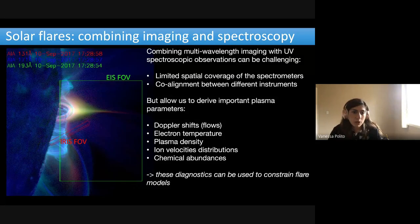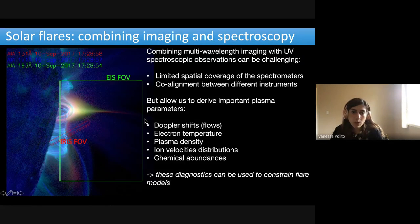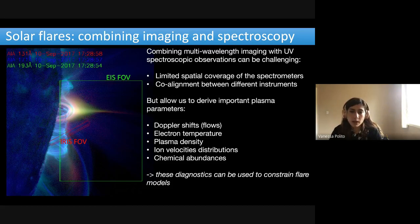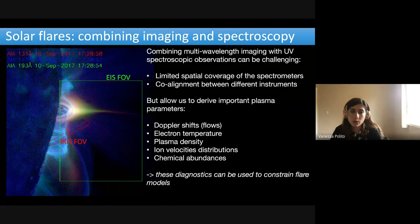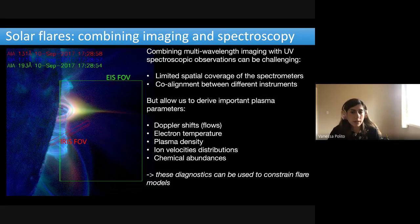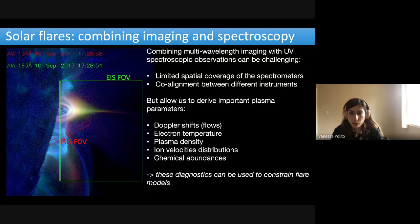This can be challenging because of the limited spatial coverage of the spectrometers and issues with co-alignment between different instruments. But when we combine spectroscopy and imaging, we can obtain important plasma diagnostics and parameters which allow us to probe the physical conditions of the plasma during flares — such as flows, temperature, densities, chemical abundances, etc. These diagnostics can provide important constraints for flare models.